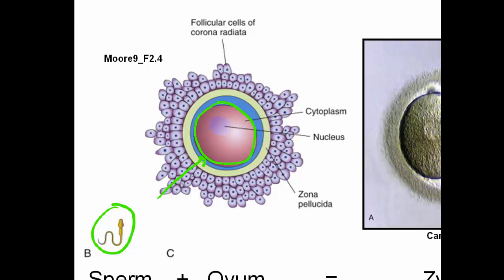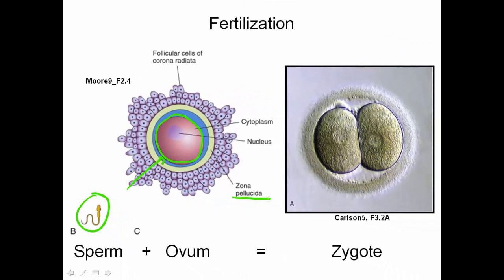The most notable of these layers is the zona pellucida. The zona pellucida is a membrane that surrounds the ovum and contains sperm receptors which attract the sperm. Once the sperm fuses to the ovum, the zona pellucida hardens to form somewhat of a shell around the ovum.